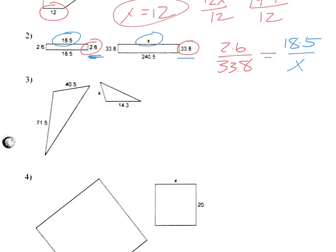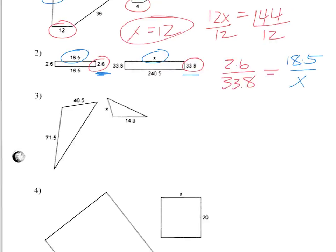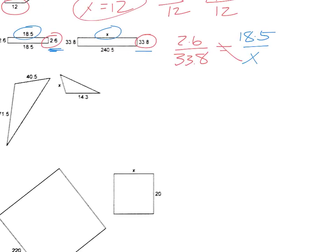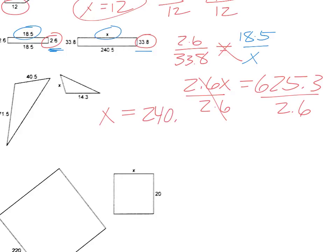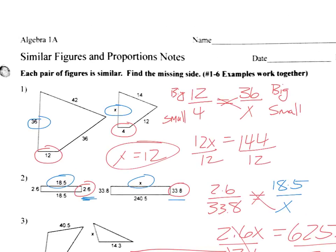So we cross multiply and get 2.6 times X equals - I'm going to get my calculator out - 33.8 times 18.5 is 625.3. Then you divide by 2.6, and X equals 240.5.